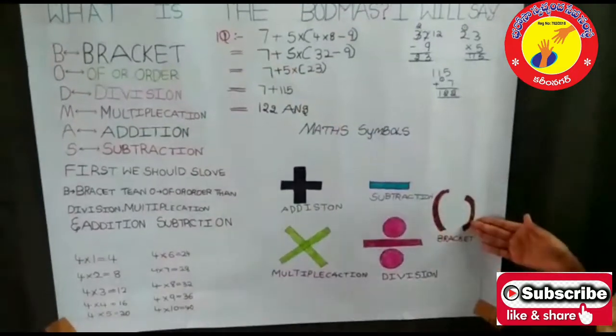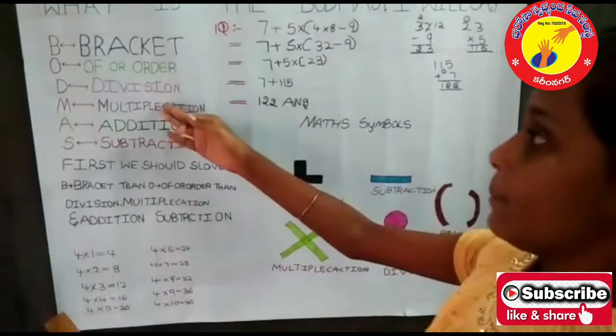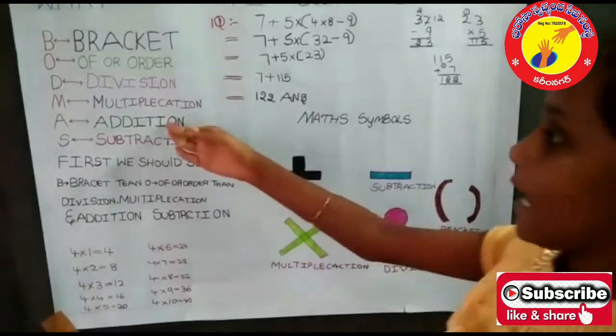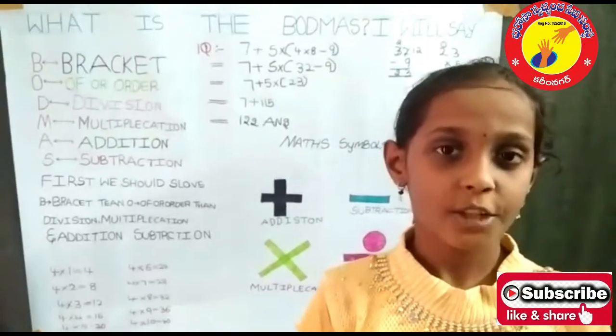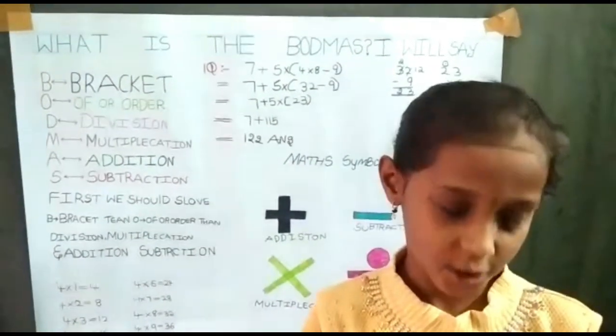Here bracket means this form. Division means this form. Multiplication means this form. Addition means this and subtraction means this. I am thinking you understand all. Thank you for watching this video. Thank you.